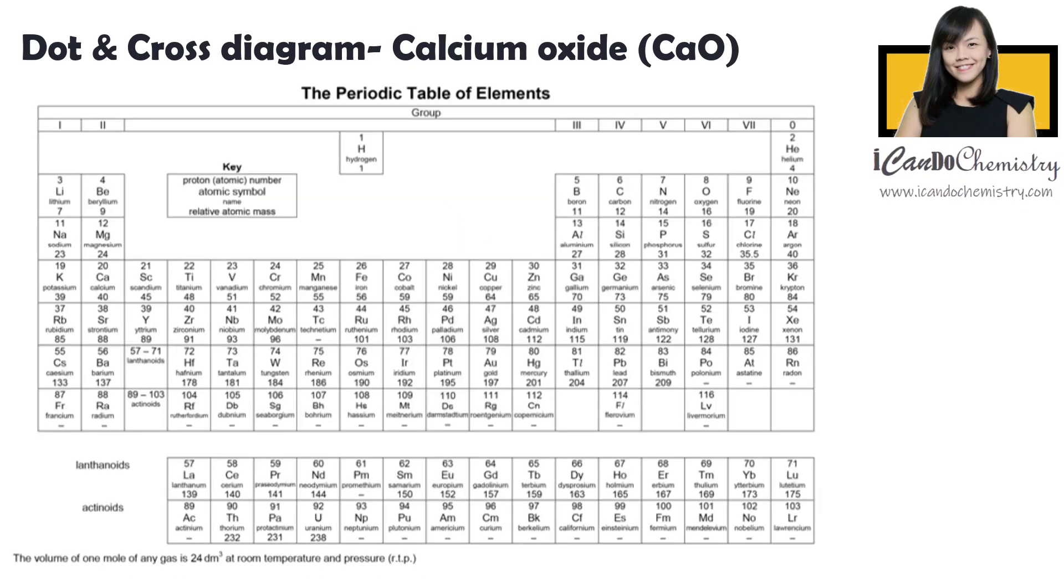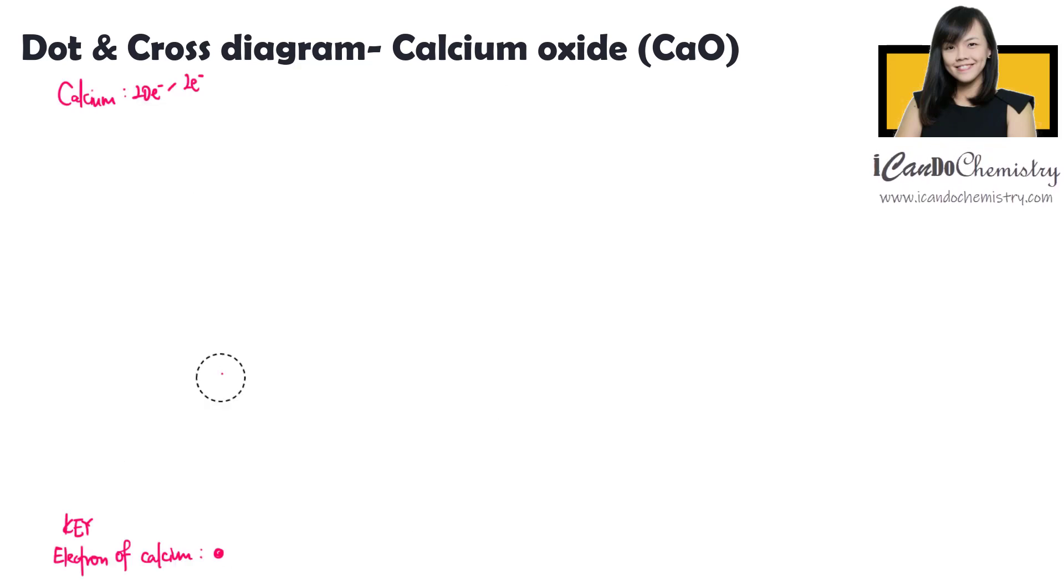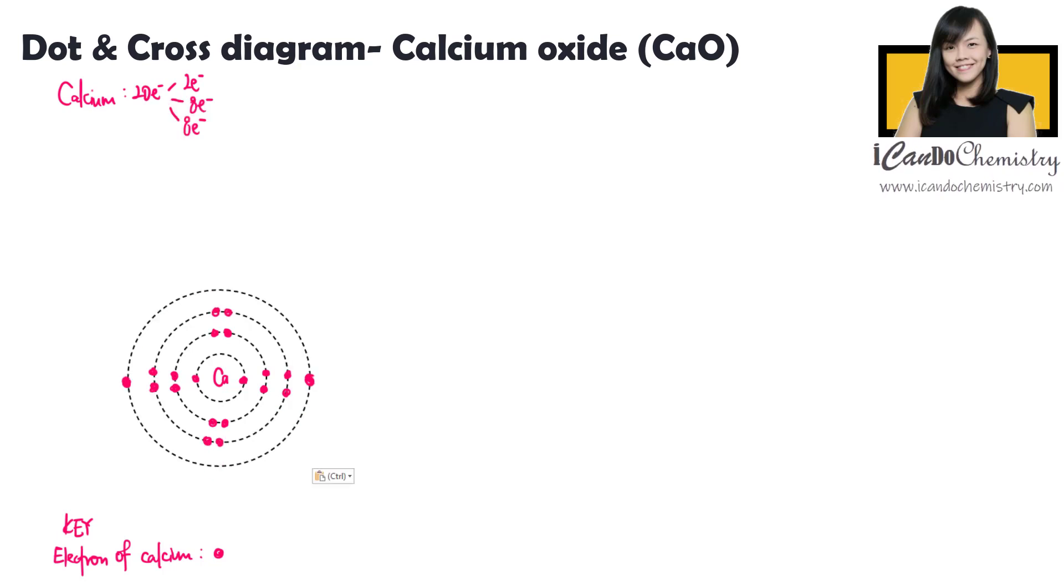Let's focus on calcium now. It is here in the periodic table. Calcium has 20 electrons. We'll use dot to represent the electrons of calcium. The first shell holds two electrons. The second and third shell holds eight electrons. The last two electrons are in the fourth shell.